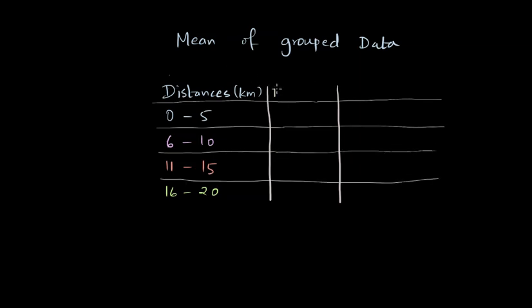And now I'll just say these are number of people walking these distances in the morning. Let's say there are 6 people walking 0 to 5 kilometers in the morning, then there are only 2 people who walk 6 to 10 kilometers, then there are 3 people who walk 11 to 15 kilometers, and there are 4 people who walk 16 to 20 kilometers.